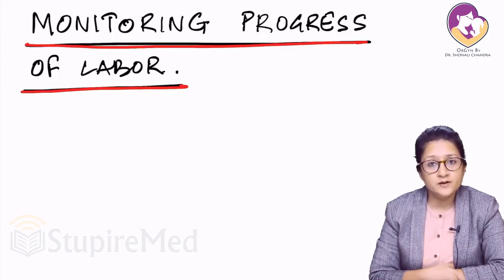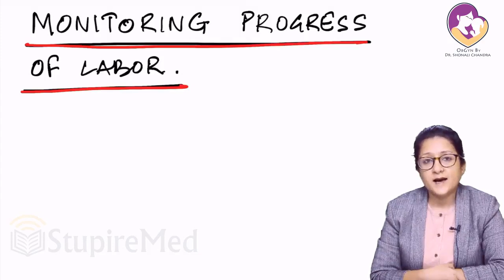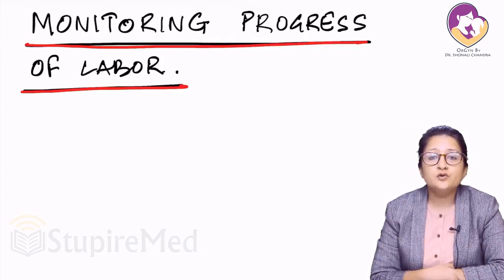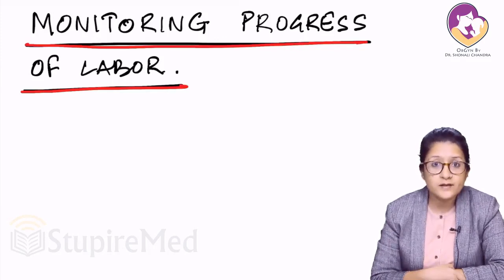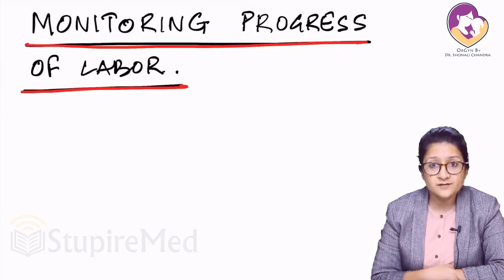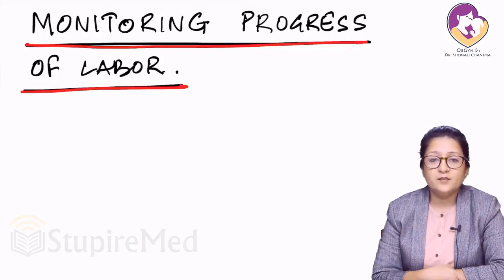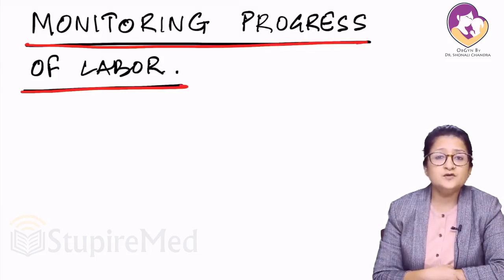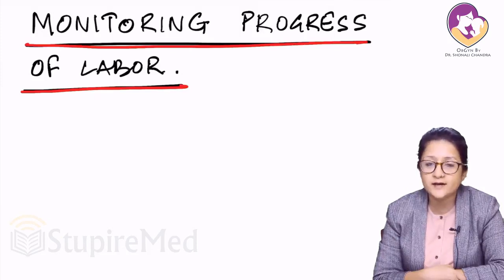We're talking about monitoring the progress of labor. The monitoring is important because we want to identify women during labor who are not progressing at the right pace, whose progress is slower than normal, or whose progress has halted completely. We want to achieve normal vaginal delivery, and that is possible if labor progresses normally. So to identify the abnormalities of labor, we have to first understand how labor progresses normally.